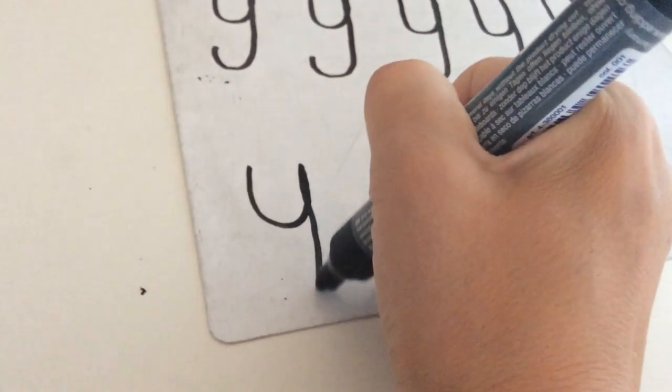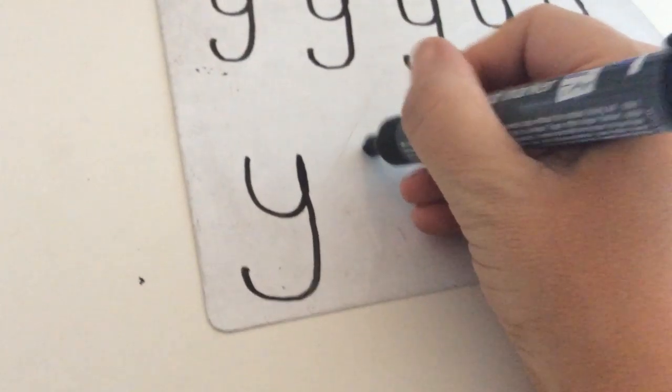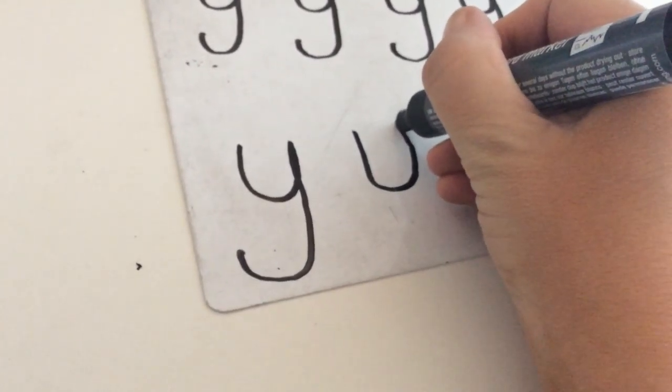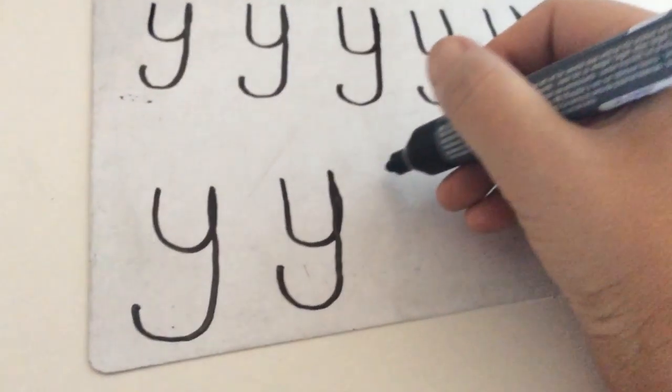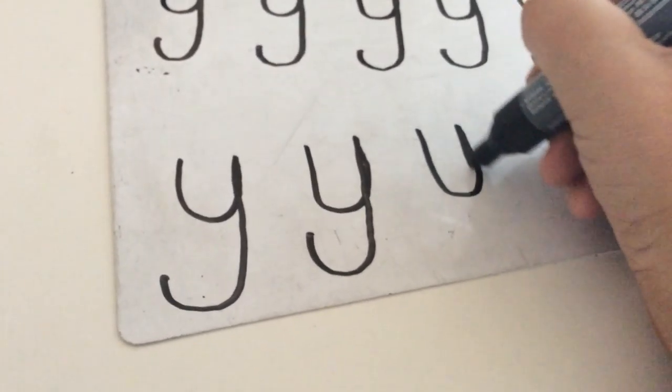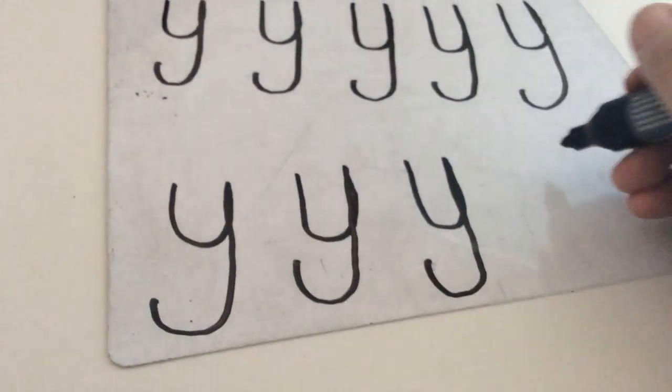Down, curve round and up, down, giving him a tail. Down, curve round and up, down, giving him a tail. My whiteboard's moving. Down, curve round and up, down, giving him a tail.